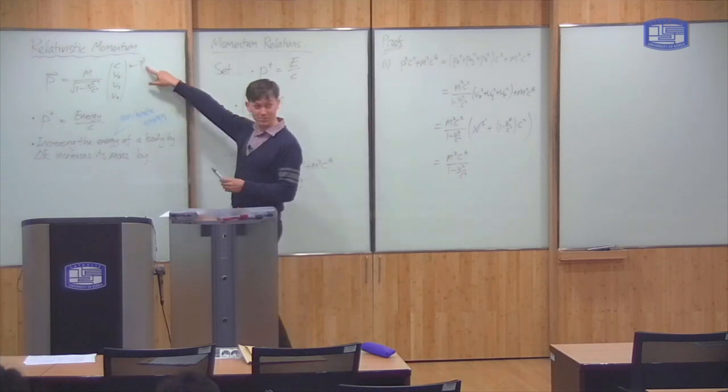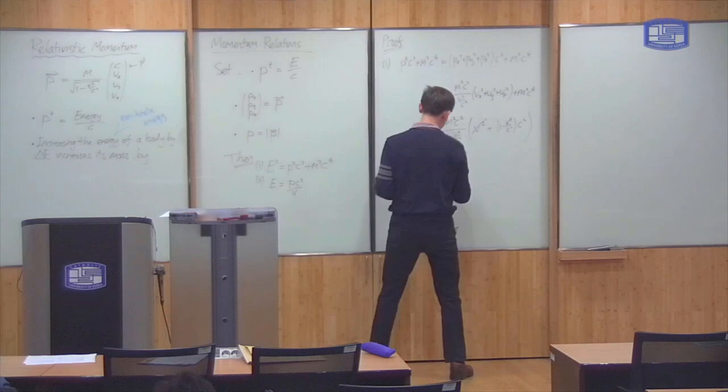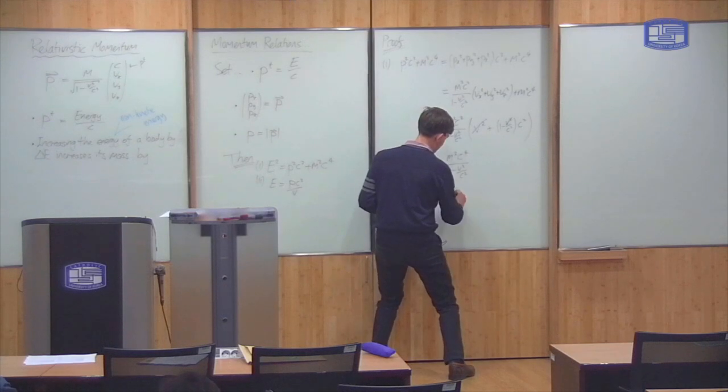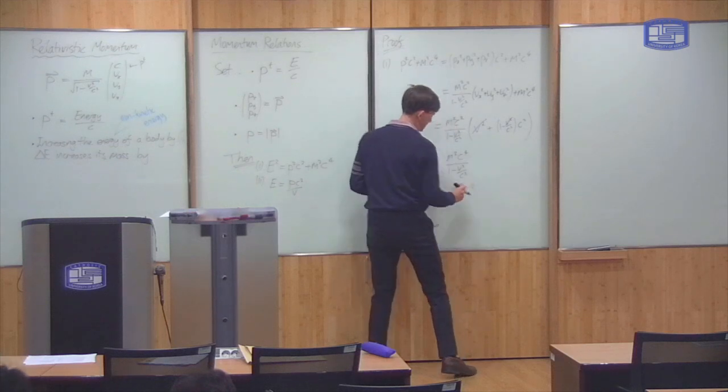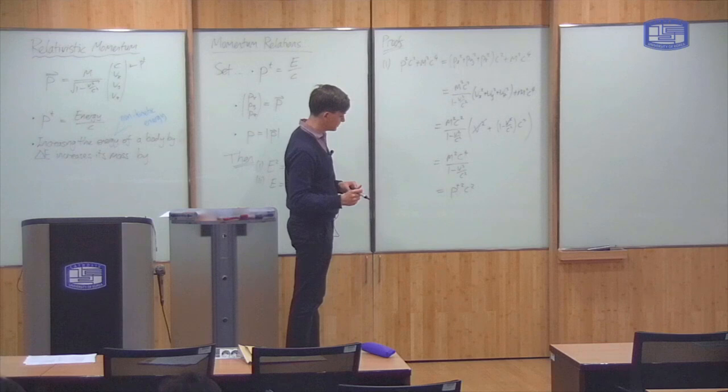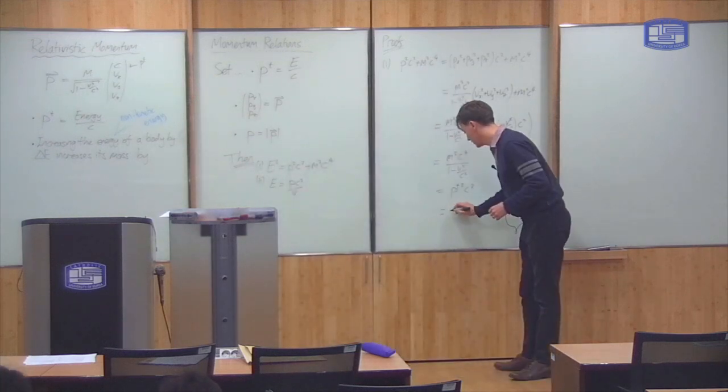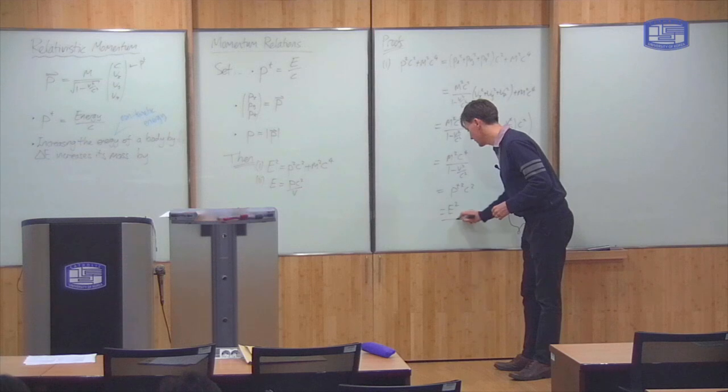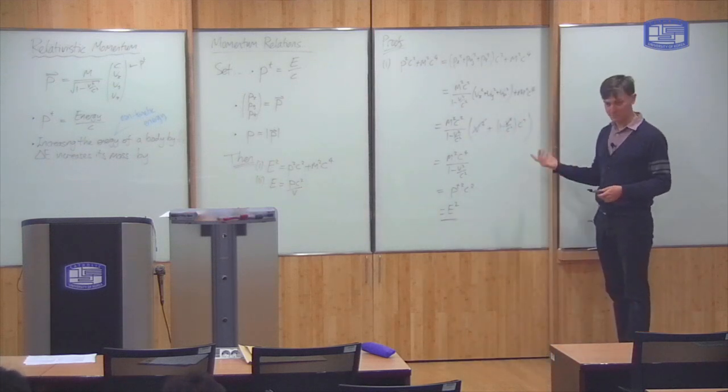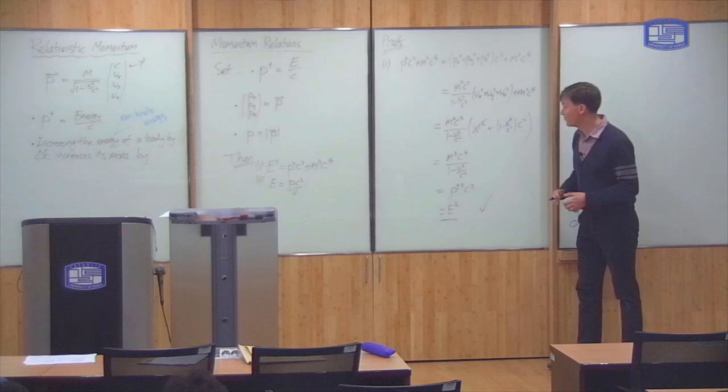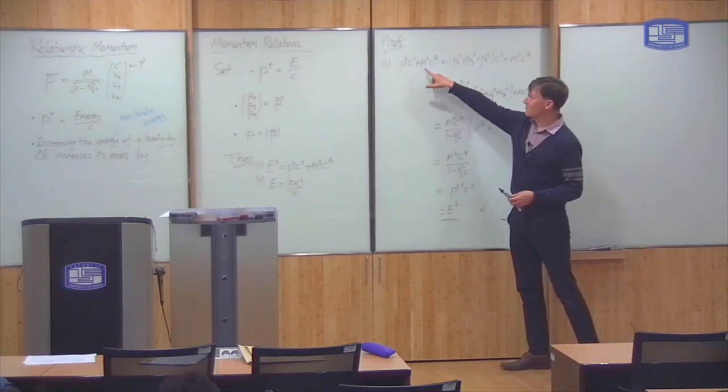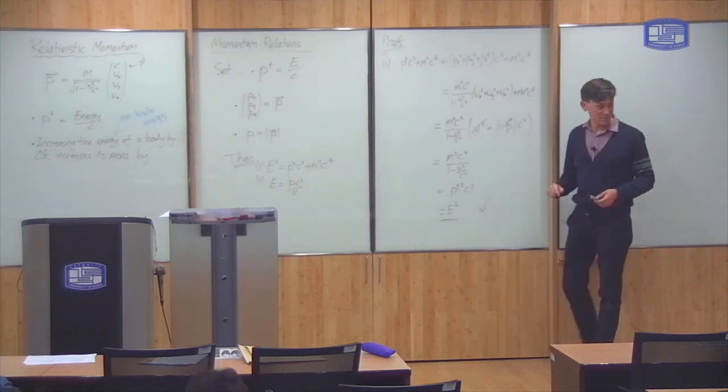So this comes out as being m squared c to the fourth over 1 minus v squared over c squared. But then from the time component of momentum here, this is just equal to pt squared times c squared. And that was the definition of E. It is E squared. So that's the end, right? We proved that p squared c squared plus m squared c to the fourth is E squared.